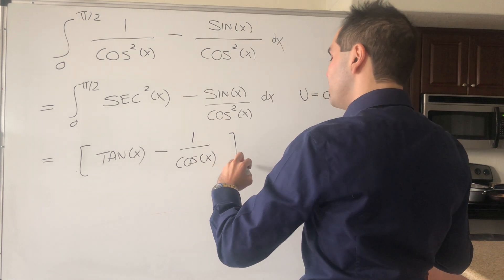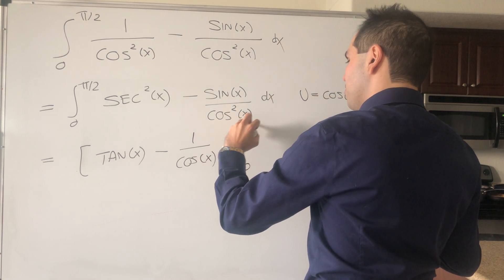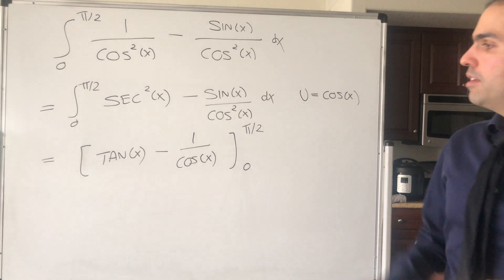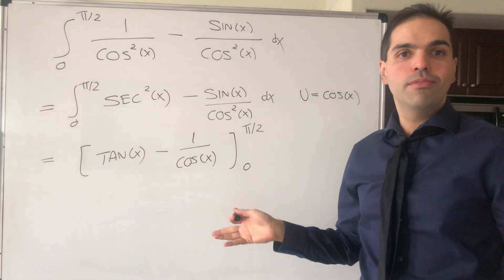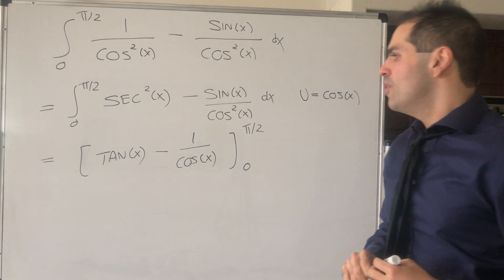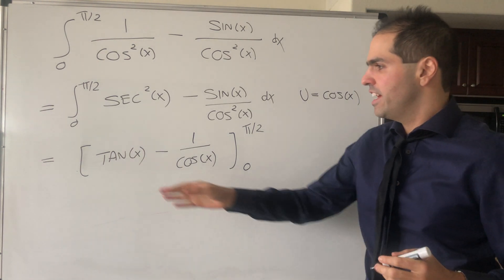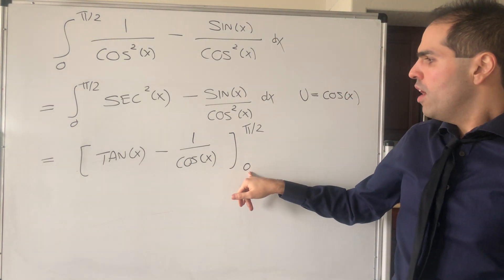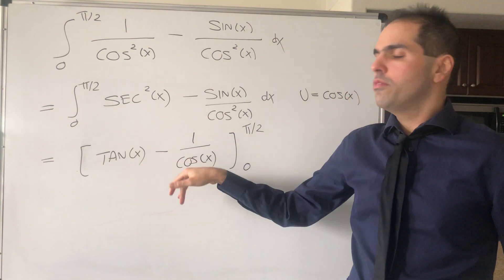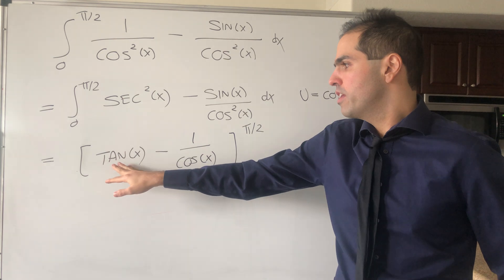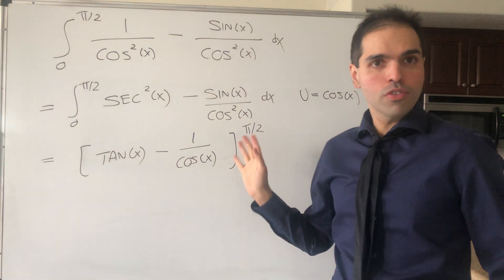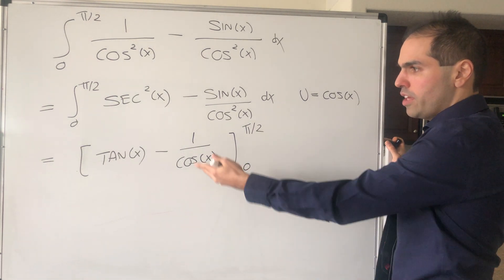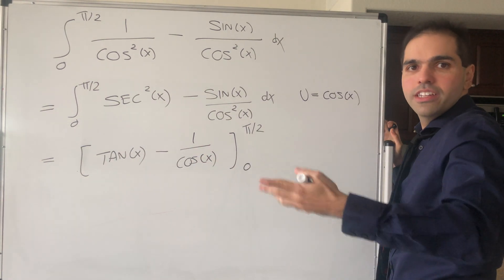And now you want to evaluate this from 0 to pi over 2. All right. Here's just one little issue. If you do that, you actually get infinity minus infinity. So we actually have to be a little bit careful. Now, at 0, there's not a big problem, because we get something 0 minus 1 that's minus 1. But at pi over 2, it's a problem.